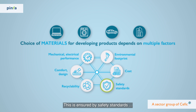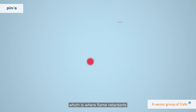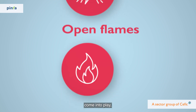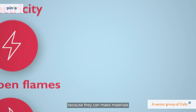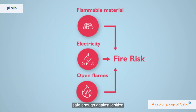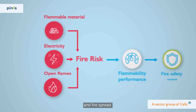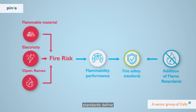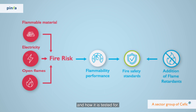This is ensured by safety standards, which is where flame retardants come into play. Because they can make materials safe enough against ignition and fire spread. Fire safety standards define which level of flammability is allowed and how it is tested for.